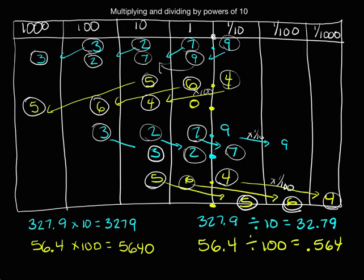All of this place value chart work allowed us to see exactly what was happening — how the digits are moving to the right or left depending on whether we're multiplying or dividing. There's a pattern: we can look at our powers of 10 to see exactly which way and how many places our digits are going to shift. Going back to 327 and 9 tenths times 10 — there is one zero in 10. Because we're multiplying, our digits move to the left. People often say that the decimal moves to the right one place value when you multiply by 10, and that's the same thing — when the decimal moves to the right, the digits are moving to the left.